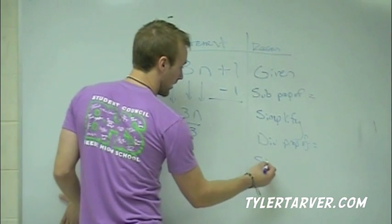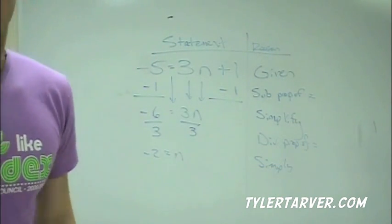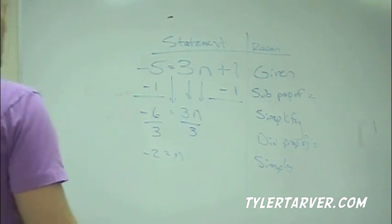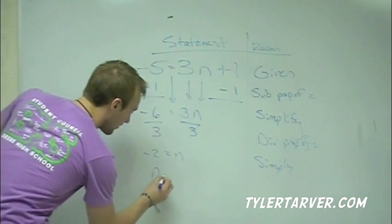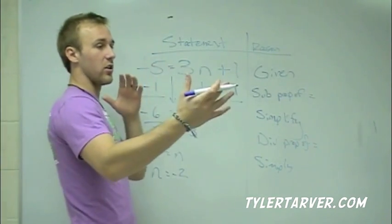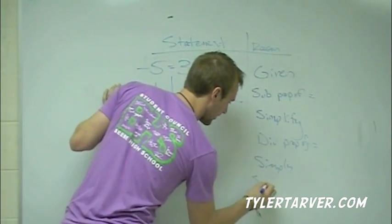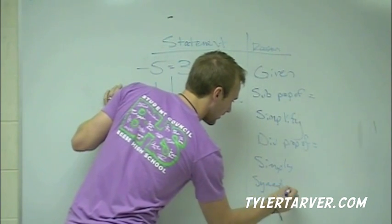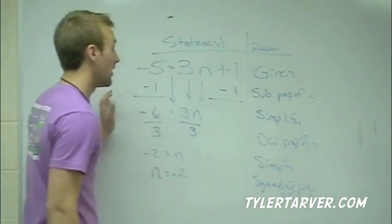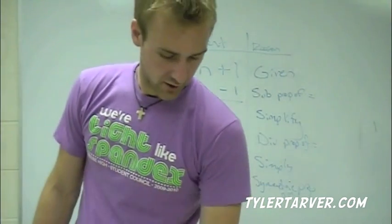We simplified again. Sometimes they ask you to flip it so n equals negative two. What's it called when we switch it? Symmetric Property of Equality. And that's a proof!